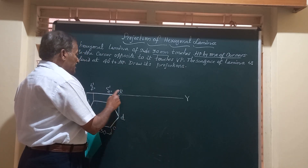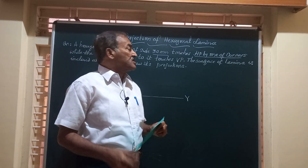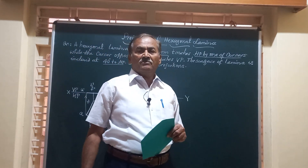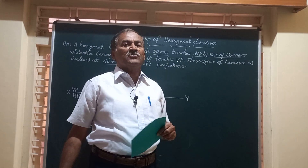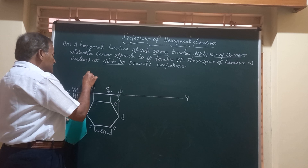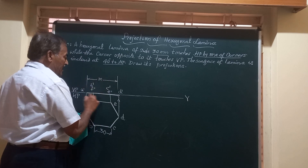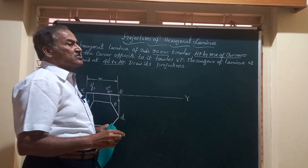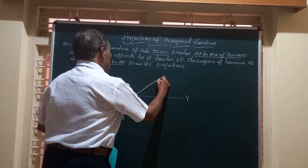This line on XY represents the hexagonal face resting on HP, with six points A, B, F, C, E, and D. The lamina is in total contact with the horizontal plane. Now it has to make an angle of 40 degrees with HP. Whenever any lamina makes an angle with HP, that can be seen in the front view. I am going to redraw this front view line of length M at an angle of 40 degrees to HP.